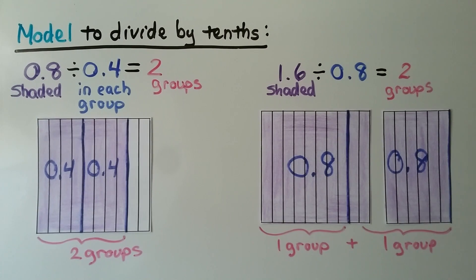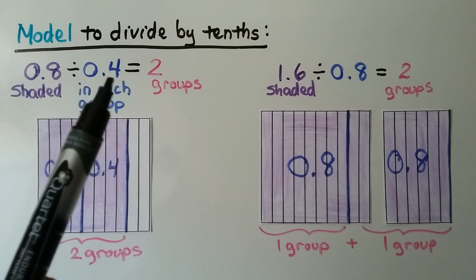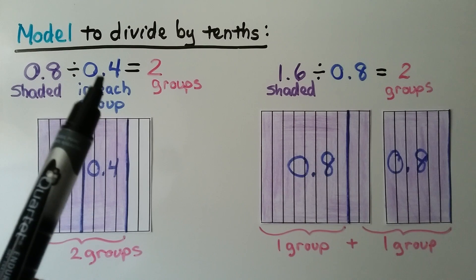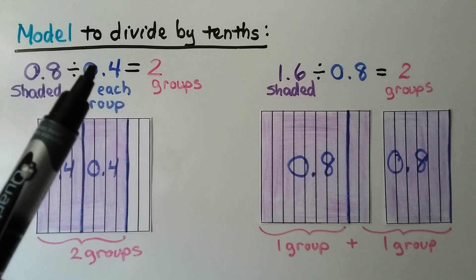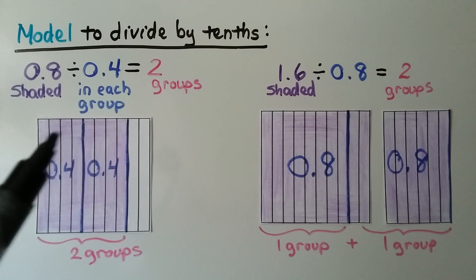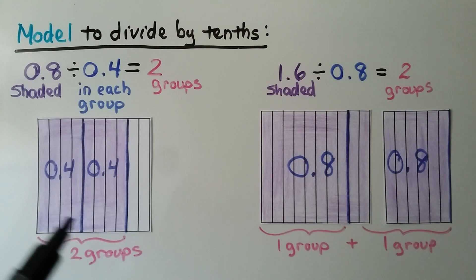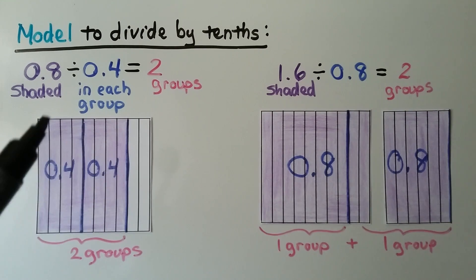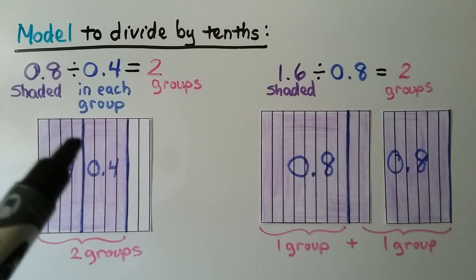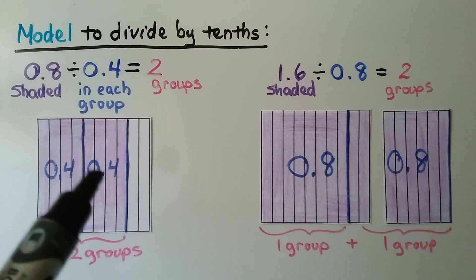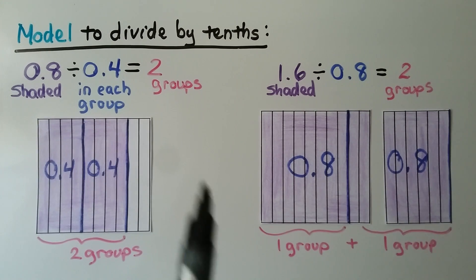Here's how we model dividing by tenths. We're dividing 8 tenths by 4 tenths. We shade in 8 tenths — that's 8 columns. And we make groups that have 4 tenths in them. We make 2 groups. Our quotient is 2.